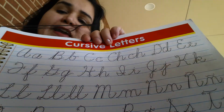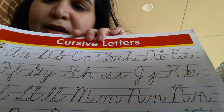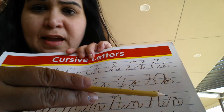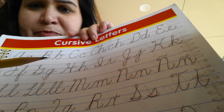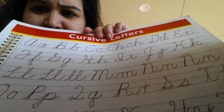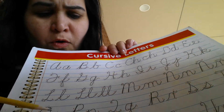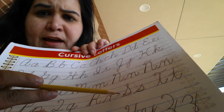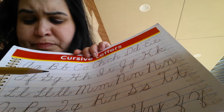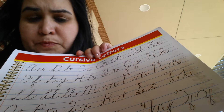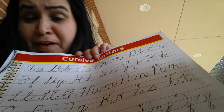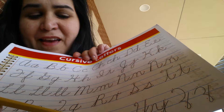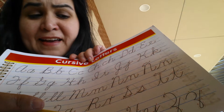So here we go. Ready? A, B, C, CH, D, E, F, G, H, I, J, K, L, EY — two L's makes the EY, the Y sound. M, N, EÑE.